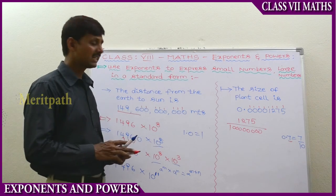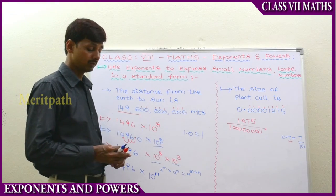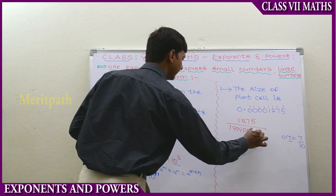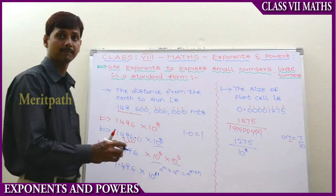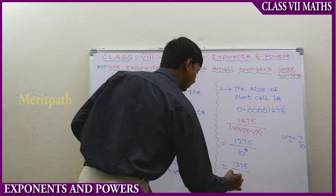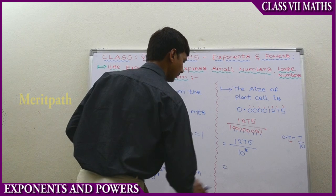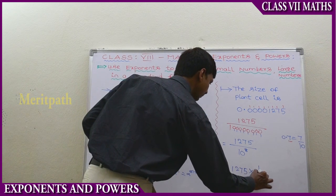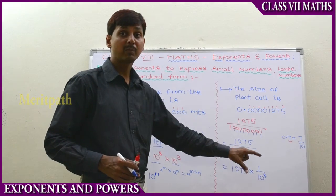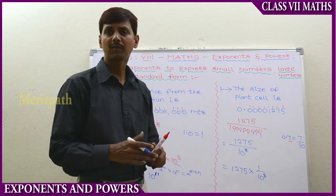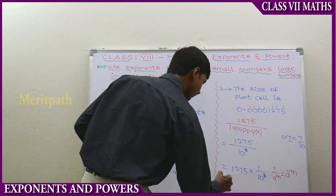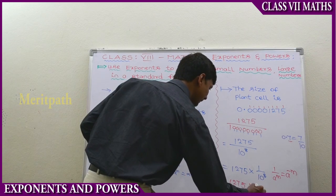Using the same concept of zeros, 1275 divided by 10 to the power of 8 — counting the zeros: 1, 2, 3, 4, 5, 6, 7, 8 — gives us 10 to the power of 8. This can be written as 1275 into 1 by 10 to the power of 8, separating the fraction. So 0.00001275 equals 1275 into 10 to the power of minus 8.